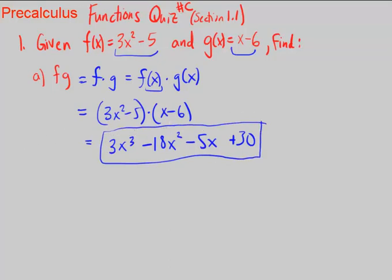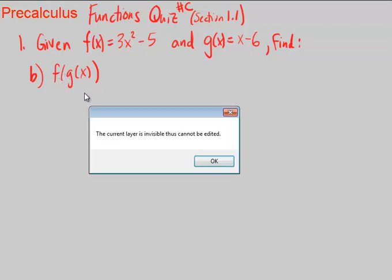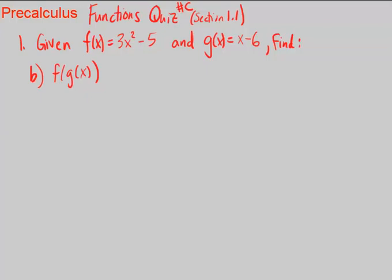Okay, so next we're asked to look for f(g(x)). And remember this is the composition of functions. The input to f is a function g(x). Okay, so remember that all that means is the input to a function f is g(x). So we substitute g(x) with x - 6.